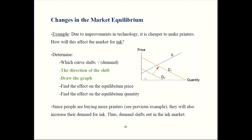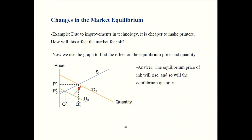Now let's talk about quantity. Quantity starts out over here in our old equilibrium. In our new equilibrium we're up here, so that quantity is going to be at this level — quantity should go up as well as price. Old quantity, new quantity, old price, new price. That wraps up our other printer example.